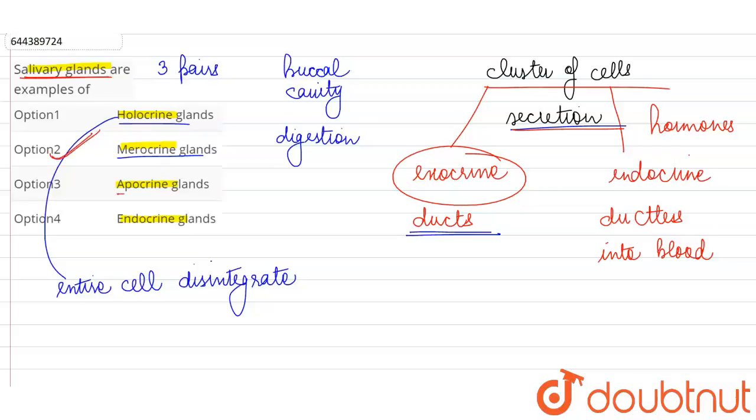Apocrine gland means that a part of the cell membrane comes with the secretion when the secretion is poured into the duct. Such an apocrine gland is represented by mammary glands in our body. Endocrine gland is not relevant here because salivary gland is not endocrine at all.